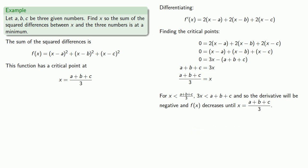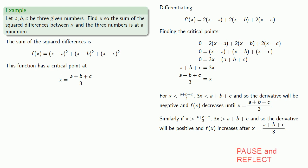Similarly, if x is greater than (a + b + c)/3, then 3x will be greater than a + b + c, and so the derivative will be positive, and f(x) increases after this point. This means x = (a + b + c)/3 corresponds to a local minimum value.